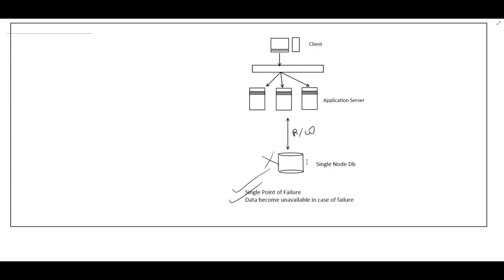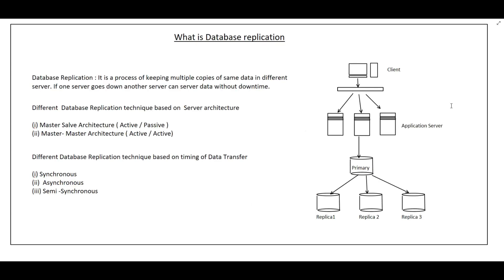To avoid this problem, we go for database replication. Database replication is a process of keeping multiple copies of the same data on different servers. Suppose we have a primary database with some data — we keep the same data on three additional servers below it.